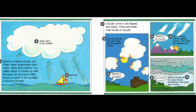Clouds come in all shapes and sizes. There are three main kinds of clouds. Cumulus clouds are puffy — they are fair weather clouds. Cirrus clouds are the highest clouds and mean fair weather too. Sometimes they bring rain or snow.